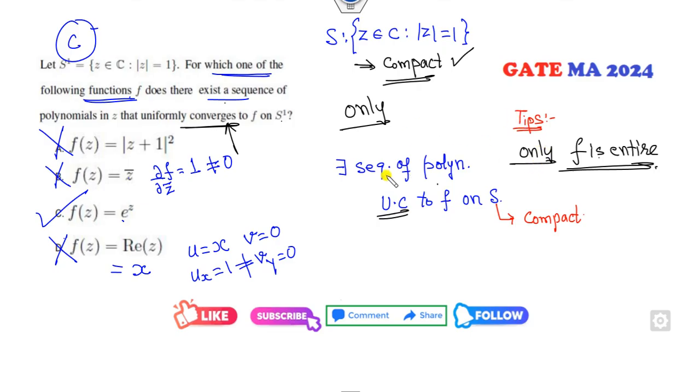You can see it's a very simple concept: whenever you have a sequence of polynomials and it converges uniformly on a compact set, only when F is an entire function—that is, a holomorphic function.